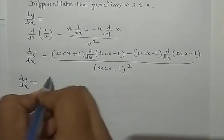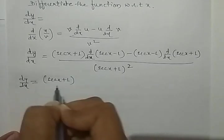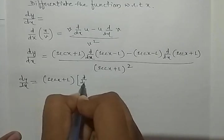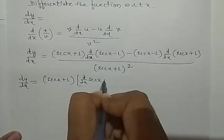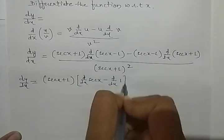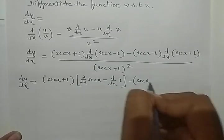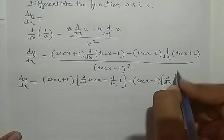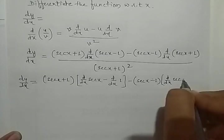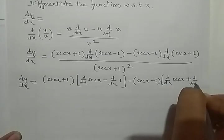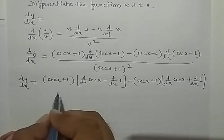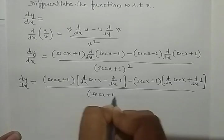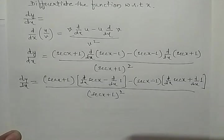dy by dx is equal to (sec x + 1) times [d by dx of sec x minus d by dx of 1], minus (sec x - 1) times [d by dx of sec x plus d by dx of 1], upon (sec x + 1) whole square.